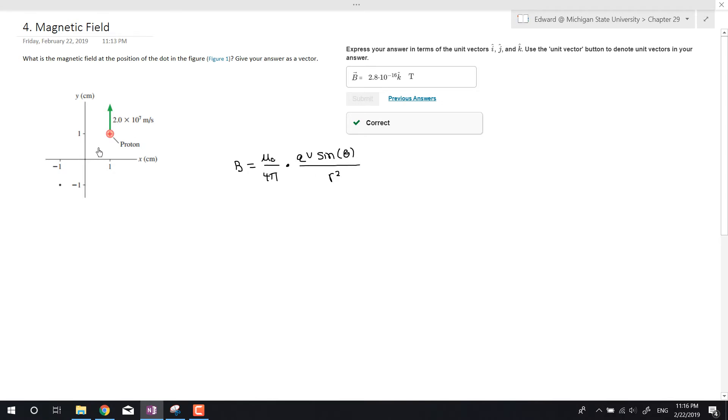So this r, this is gonna be the distance from here to this dot. And then we know that this is a perfect right triangle, so that's two centimeters. That's two centimeters. And the angle we want for sine, it's gonna be this angle, okay.